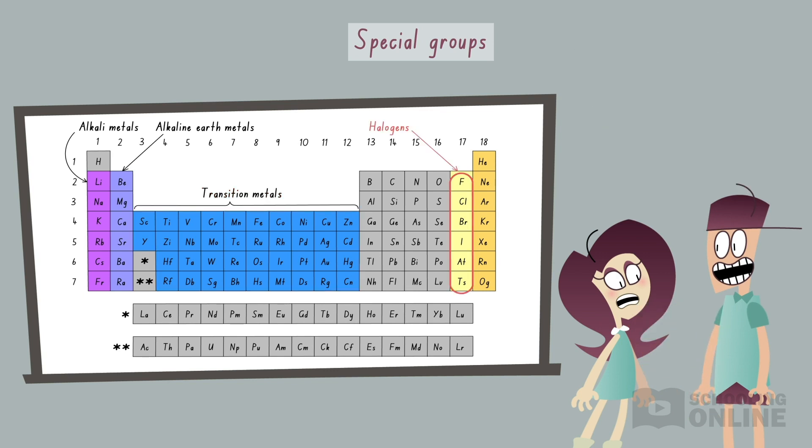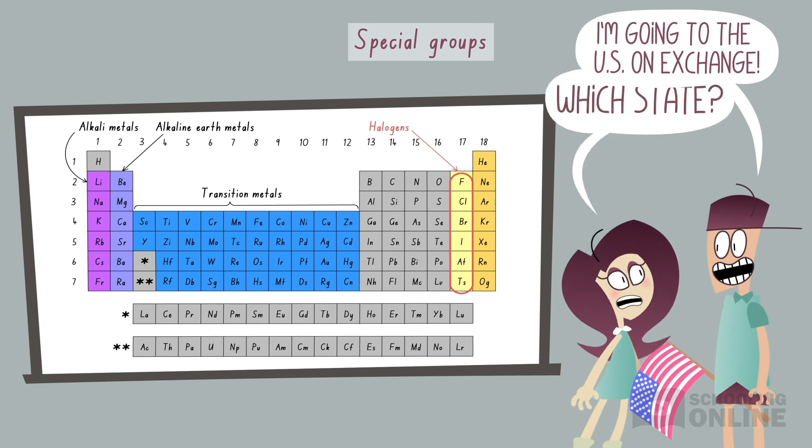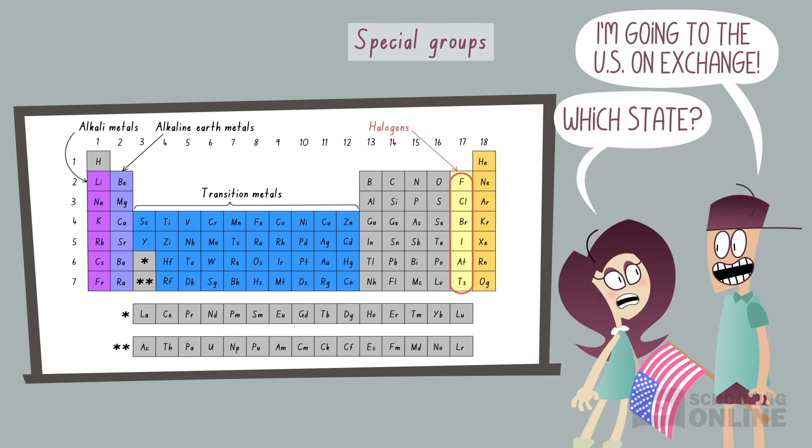If we jump to group 17, we find the halogens, which have seven valence electrons. They are also very reactive, because they are one electron away from having a full valence shell.